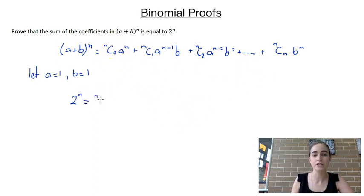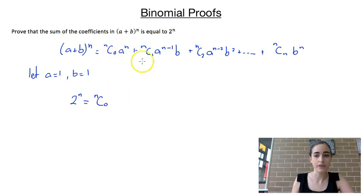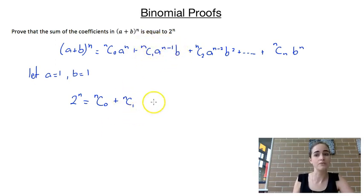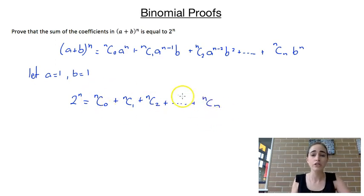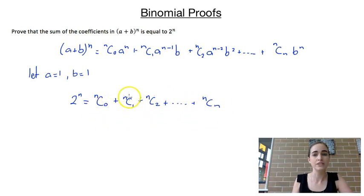We still have the coefficient nC0, but if a is 1 then we've just got 1 to the power of n, which is just 1. For the next term we have nC1, and since both a and b are 1, this term simplifies to nC1. The third term simplifies to nC2, and that continues all the way to the end. So what we've got on the right-hand side is just the coefficients — this is the sum of the coefficients — and we've shown it's equal to 2 to the power of n.